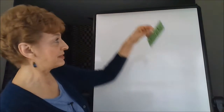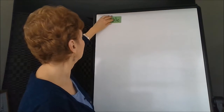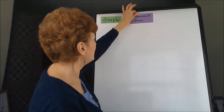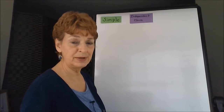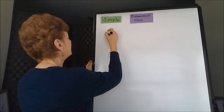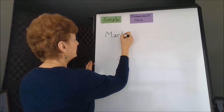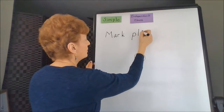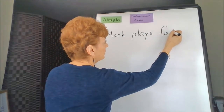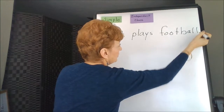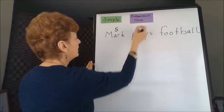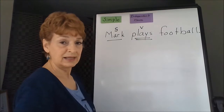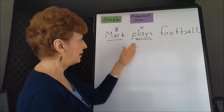So with that in mind, let's talk about how to make a simple sentence. They're really very easy. Simple sentences use one independent clause. The independent clause has a subject and verb, and it makes sense by itself. Here's an example: Mark plays football. We have a subject and a verb, and it makes a complete sentence. We have a fact — Mark plays football.